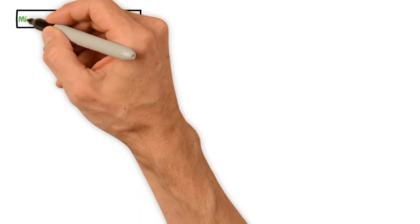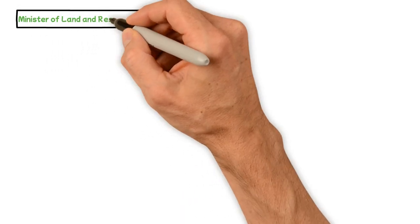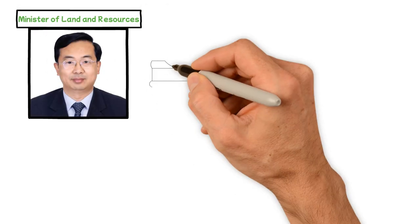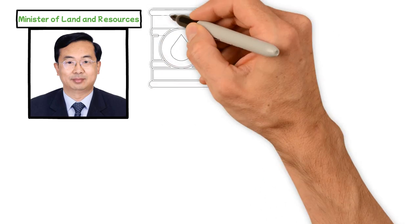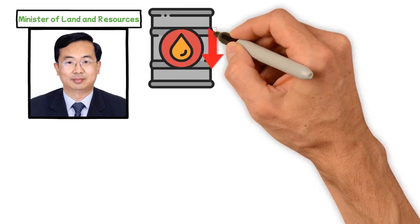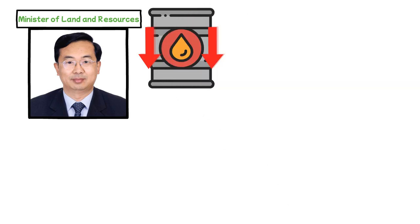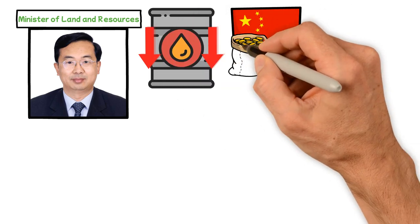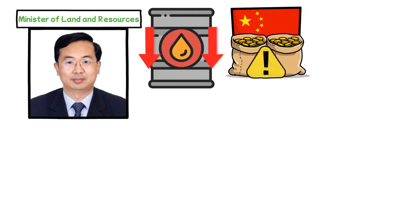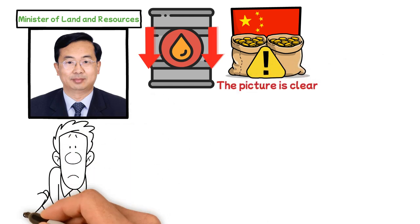Recently, a government minister, the Minister of Land and Resources, Wang Min, openly admitted that China is facing a significant shortage of oil and other natural resources that is ultimately limiting the country's present and future economic development. The picture is clear. But really, what is happening?